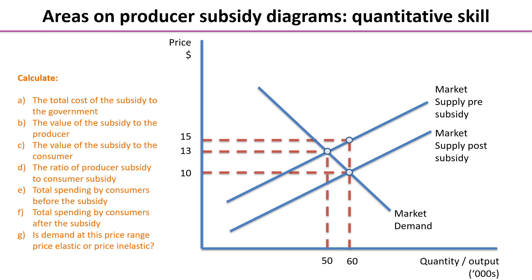Here we have another diagram, but this time we have some actual data on it. The price is in dollars and the quantity or output is in thousands. We have given you a set of questions: A, B, C, D, E, F, G. Please pause the video, work through these numerical examples and questions, come up with some answers, and when you're ready restart the video and we will compare answers.